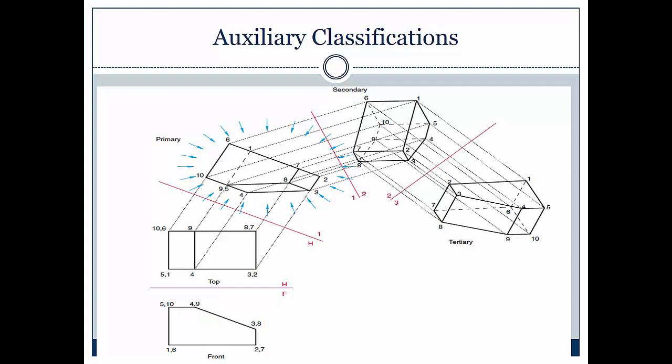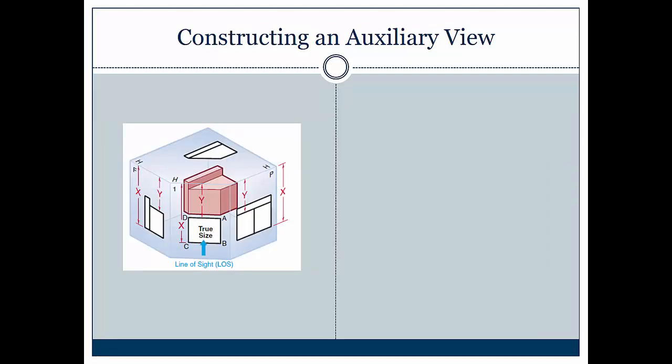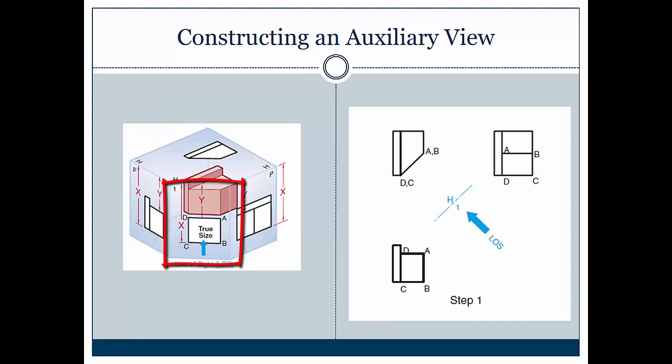Constructing an auxiliary view. The first step is to identify what we call the line of sight. Notice that we have an object. We can see a horizontal view, our plane view, and our front view. So we've identified the line of sight. Once we've done that, we can do the same in multi-view drawing. The idea is to get that true shape ABCD.